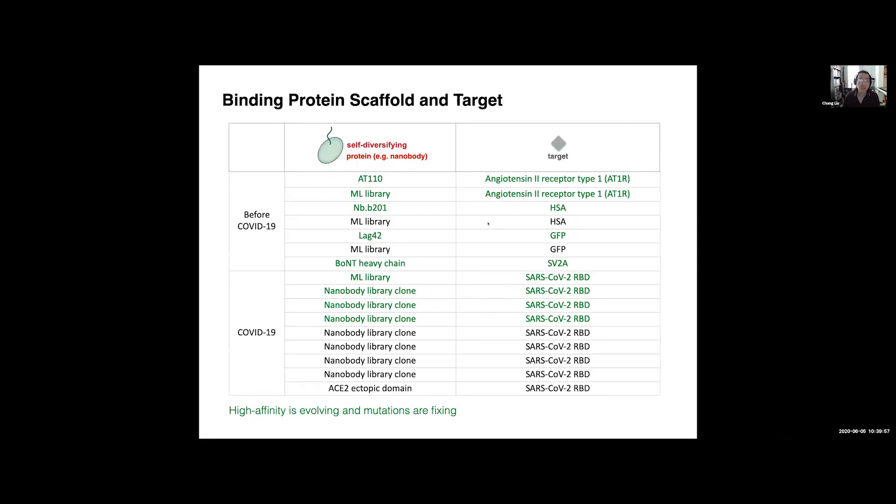And so here's a summary of all the experiments we're running. The green ones are cases where we've already seen that high affinity is evolving and mutations are fixing. So we started this project before COVID-19 with a bunch of different ideas to exploit the scale of this system for protein-binding evolution, and now we are doing it with COVID-19 targets.